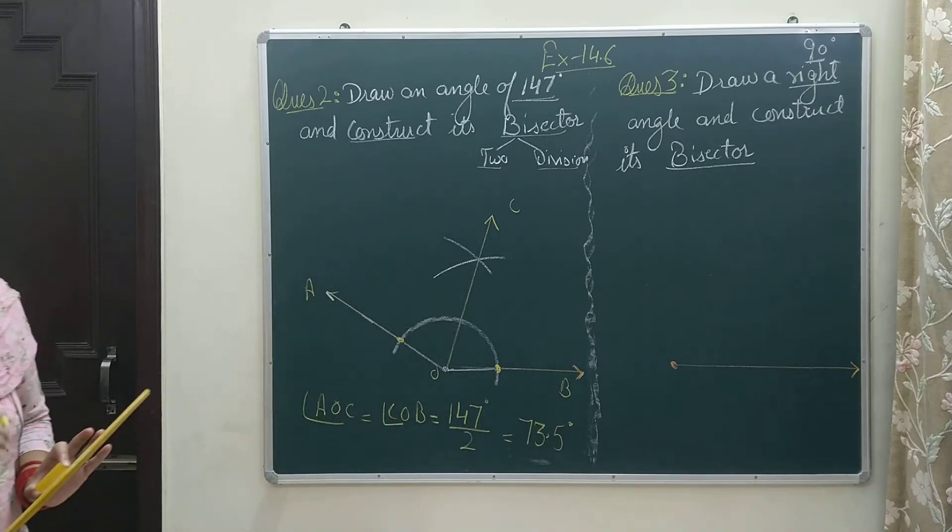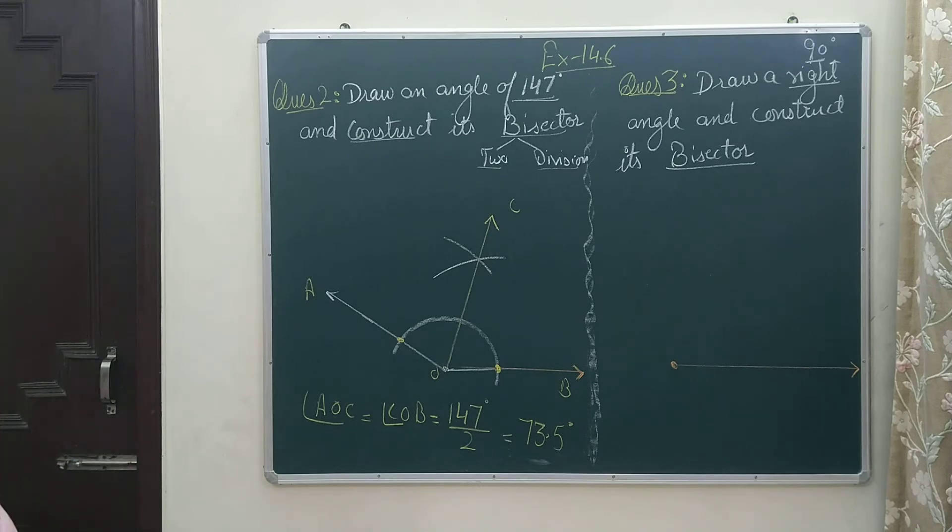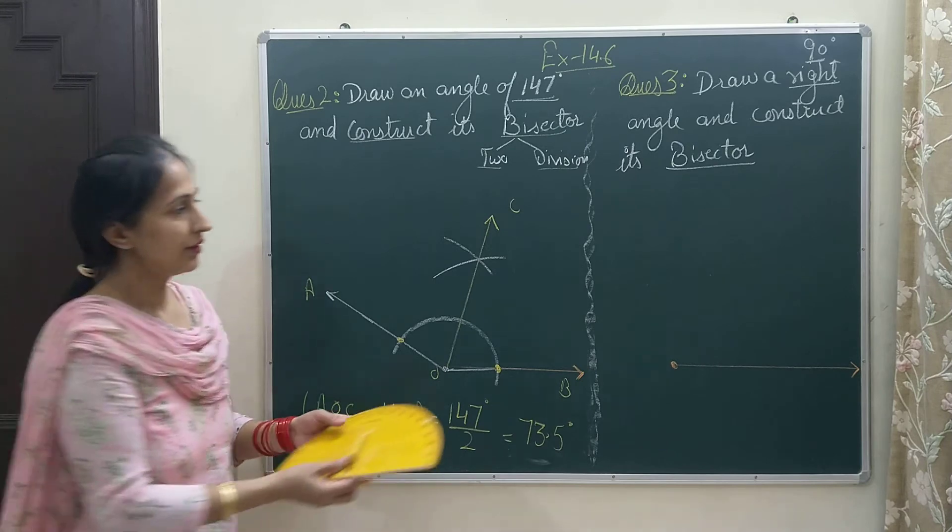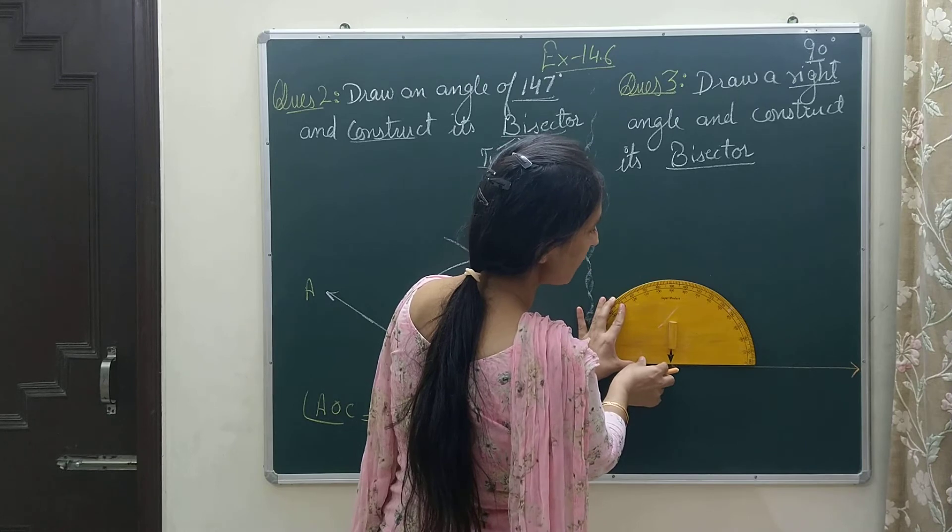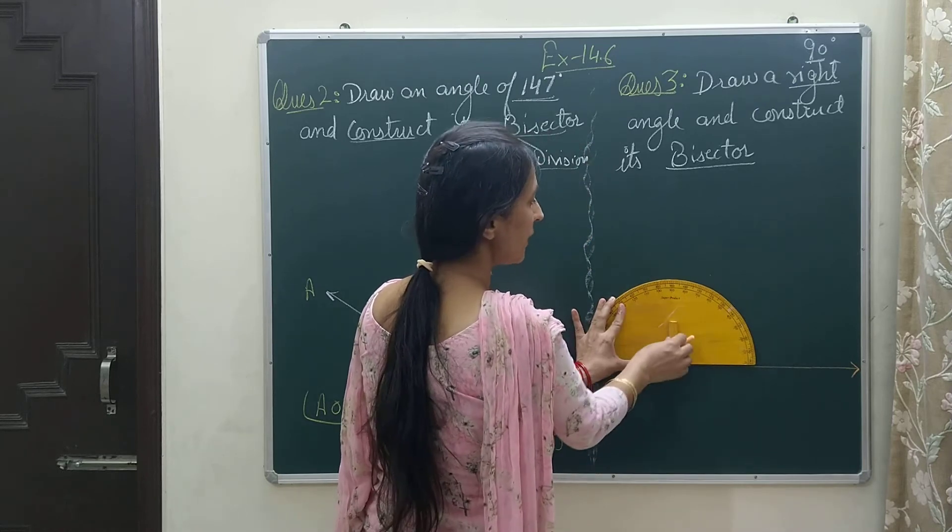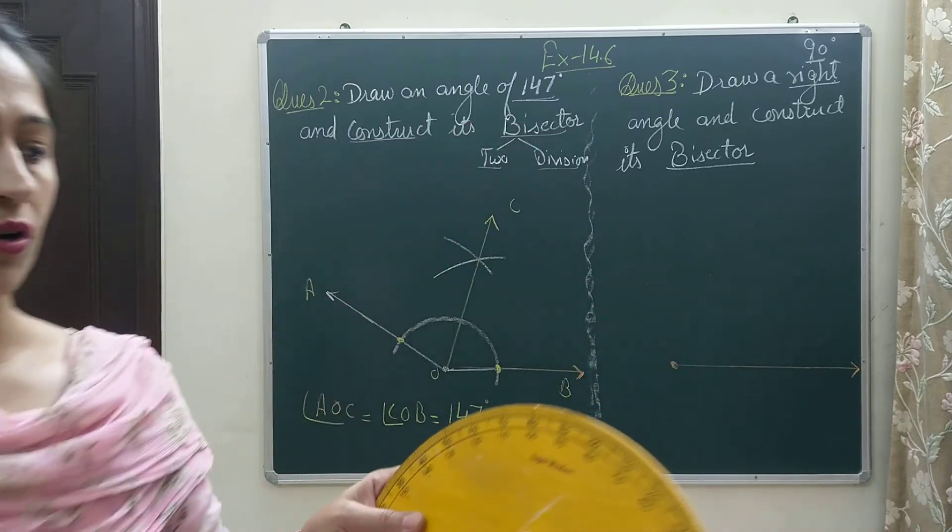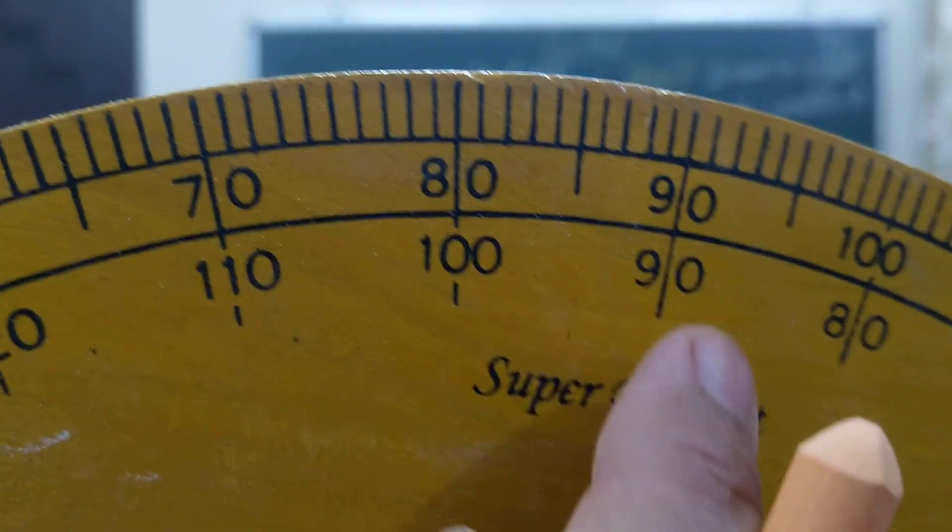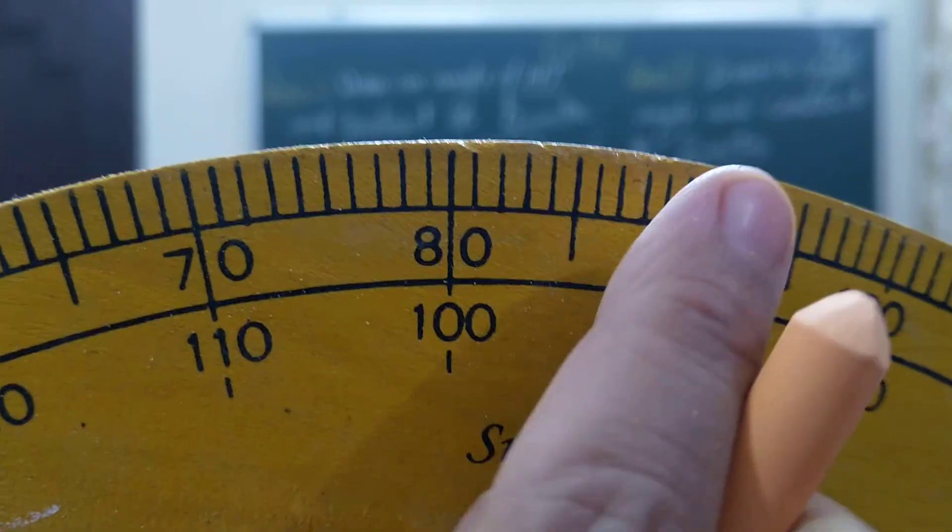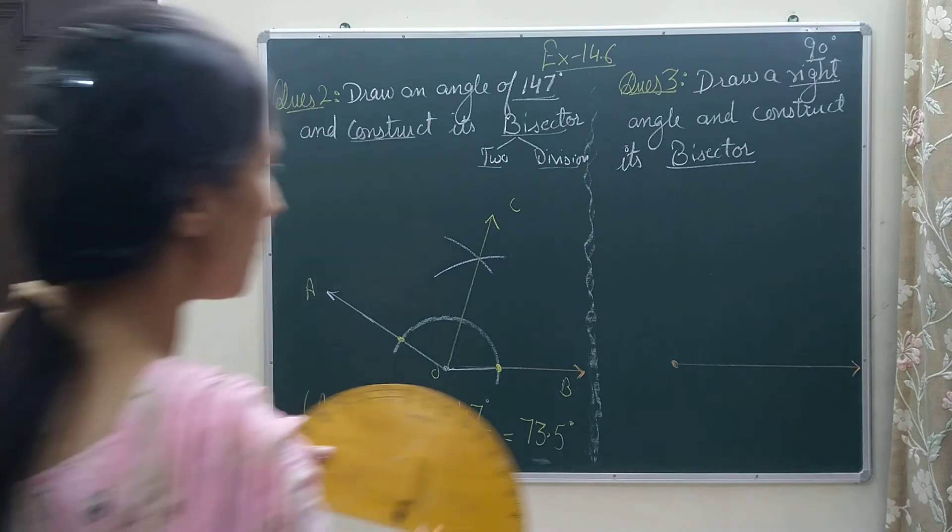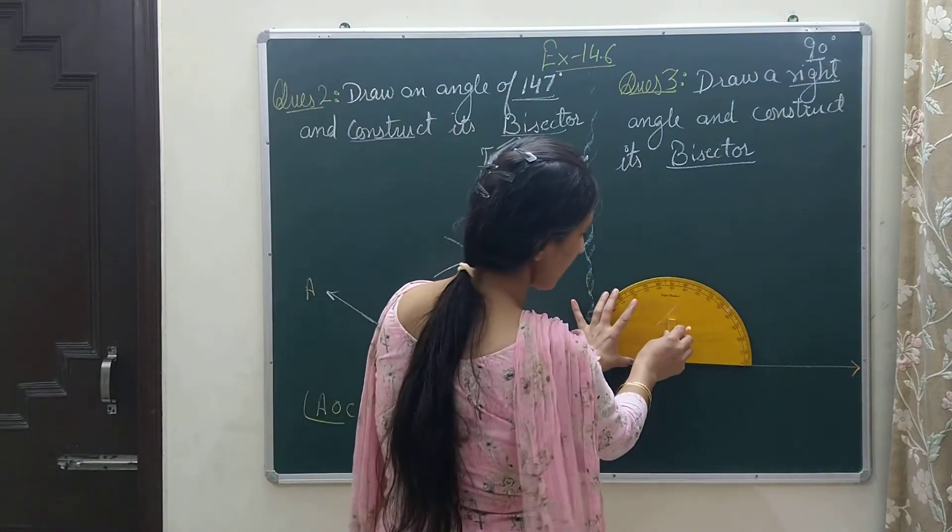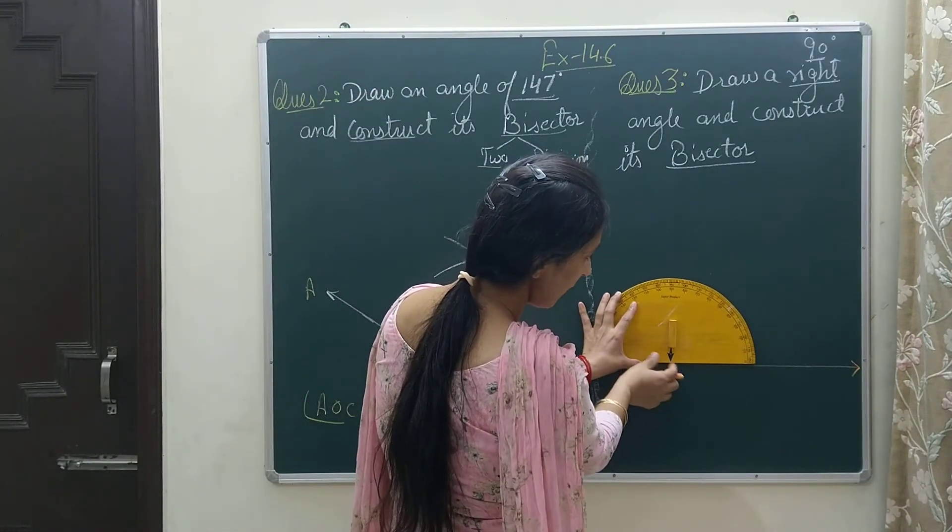Next is right angle. First of all I will draw a 90-degree angle. As I am going to see inner angles, 90 degrees is the same for inner and outer angles both. It is having the same value, same place for inner and outer.